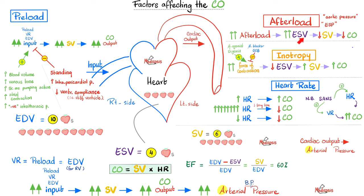The effect of force of contraction — contractility, inotropy — on cardiac output: the stronger you contract, the greater the output. If you contract harder, you eject seven apples instead of six — 70% instead of 60% — leaving fewer apples after contraction, i.e. lower ESV, which means higher stroke volume, higher ejection fraction, and higher cardiac output.